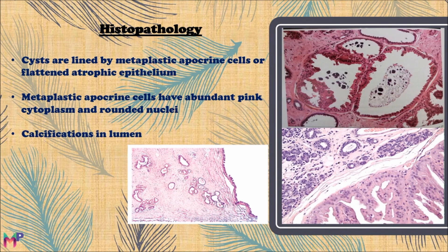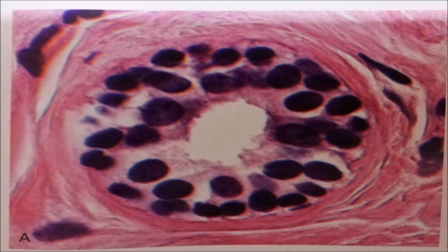On histological slides, calcifications in the lumen appear as purplish masses. Fibrosis, which is fibrostromal formation or connective tissue development in the breast parenchyma, may also be seen, as well as adenosis, which is an increase in the number of acini per lobule. Before examining the histological slides of fibrocystic changes, let us discuss the normal epithelium of the acini of the breast.